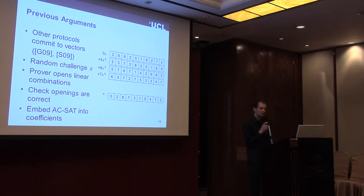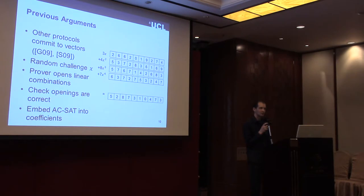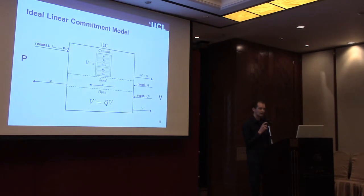Previous protocols work by having the prover commit to collections of row vectors using some homomorphic commitment scheme. The verifier then sends a random challenge x to the prover, the prover opens some linear combination of these committed row vectors, and the verifier checks that these openings are correct. If you have a homomorphic commitment scheme, you can use it to compute the commitment to the linear combination, which can then be checked. The verifier uses these linear combinations to compute various polynomials with circuit satisfiability embedded into the coefficients — and that's how the verifier checks that the circuit is satisfiable. We abstract away some of these properties using the Ideal Linear Commitment model.